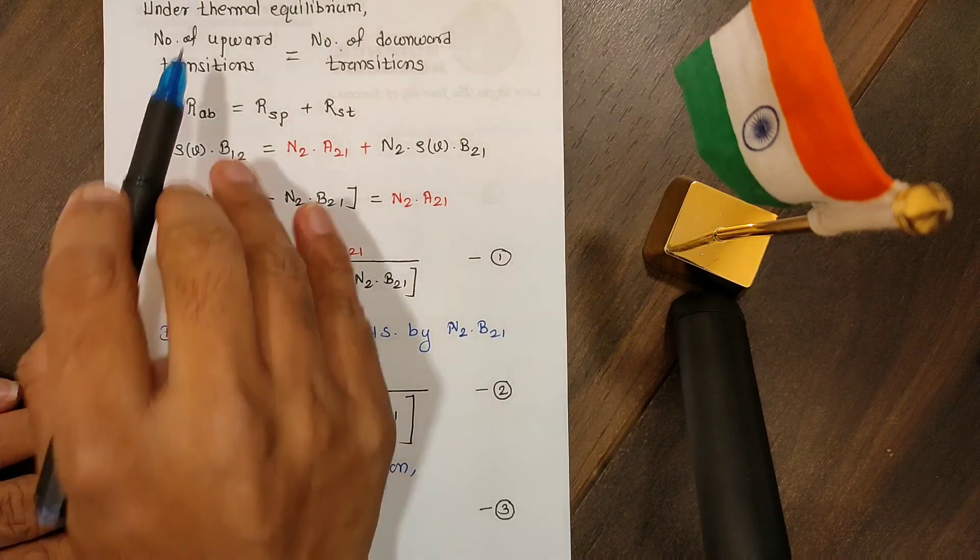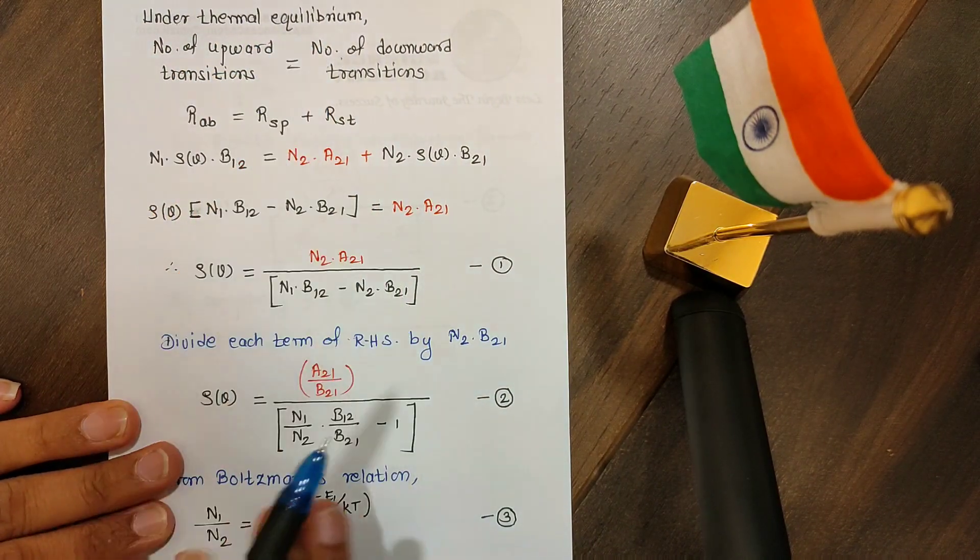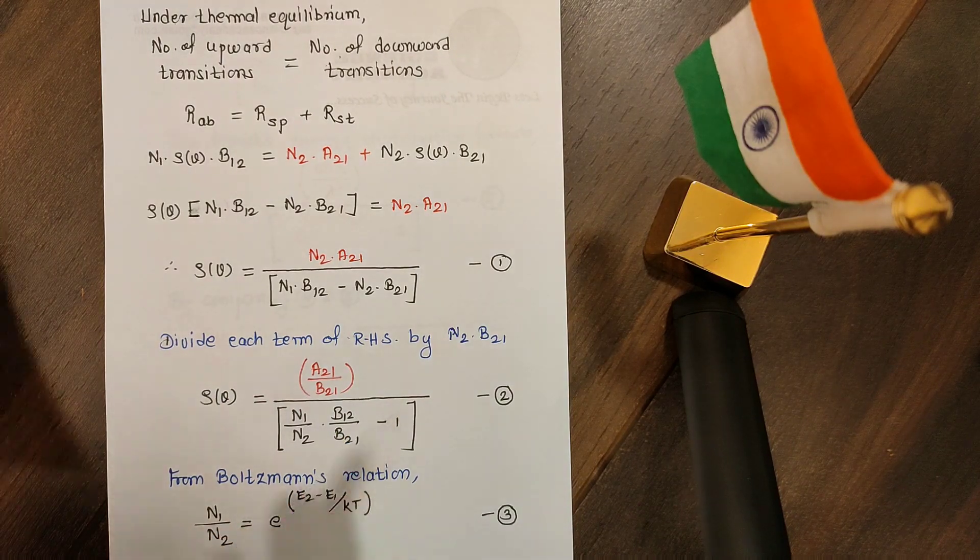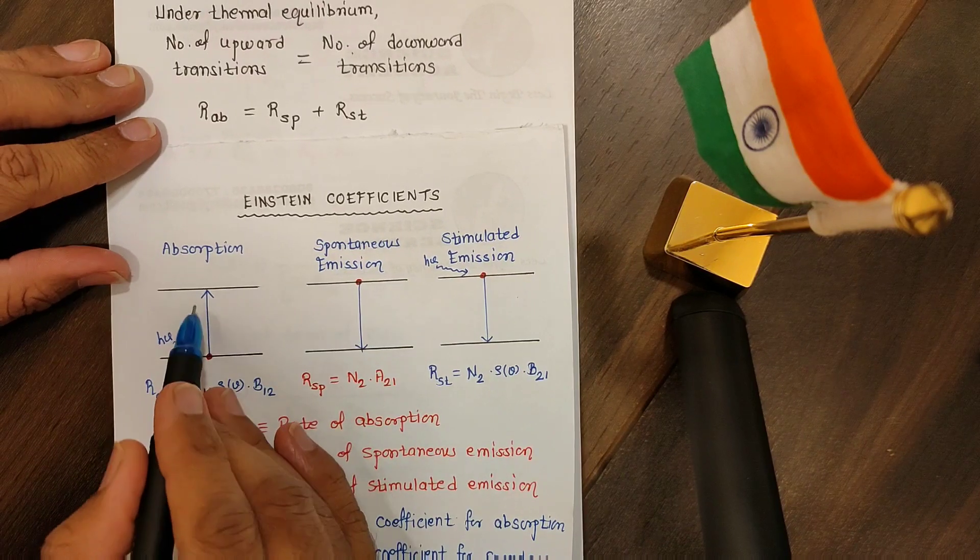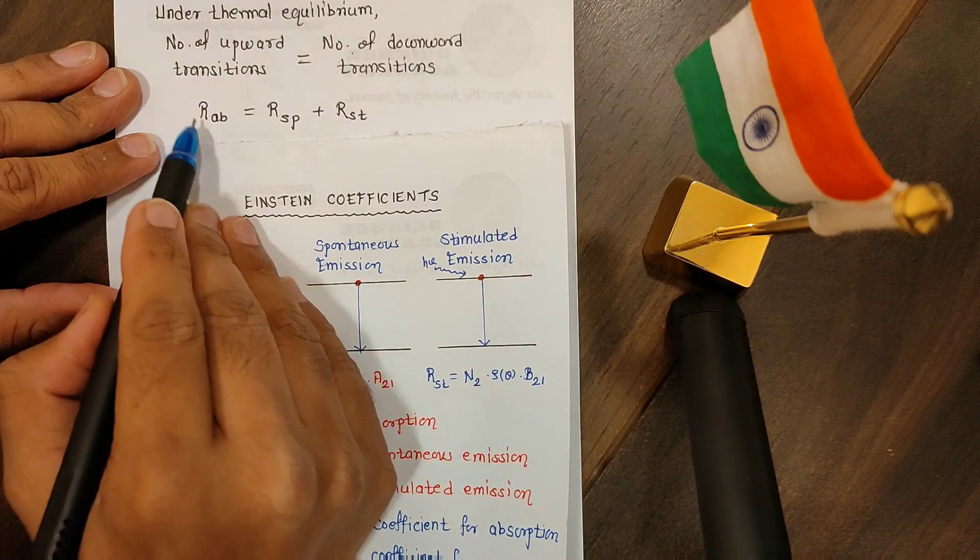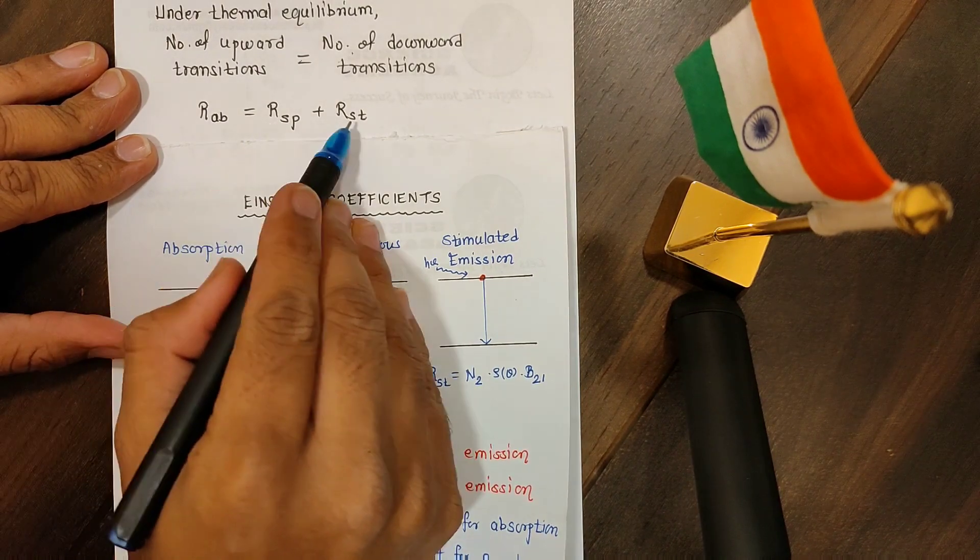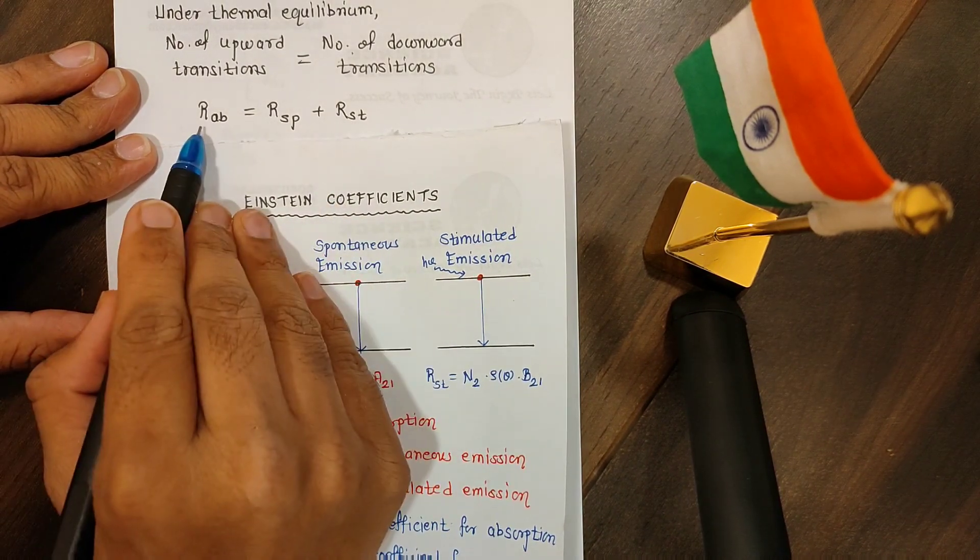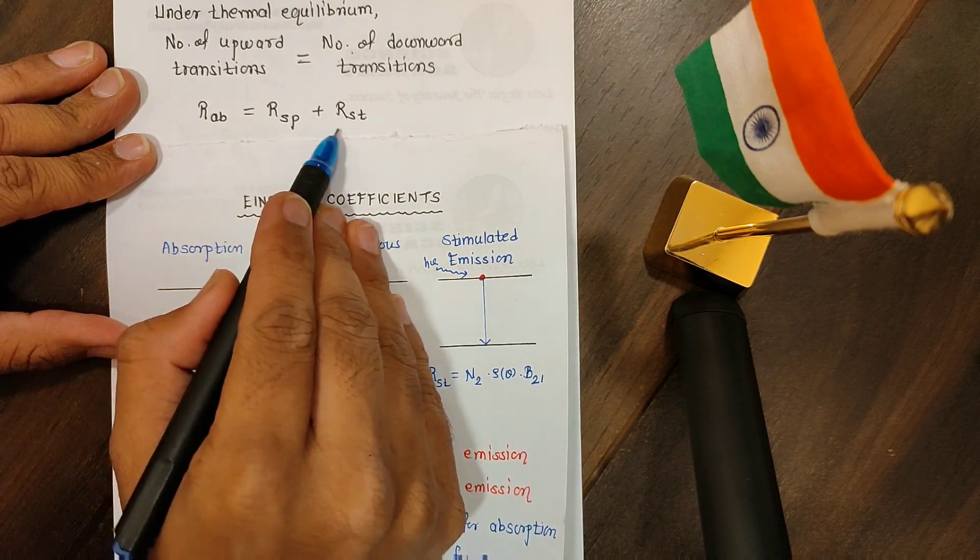So remember, for stimulated process the coefficient is b, for spontaneous process the coefficient is a. The suffix indicates the direction of transition. Under thermal equilibrium, the number of upward transitions equals the number of downward transitions.